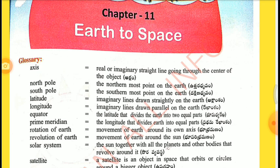Latitude: imaginary lines drawn horizontally on the earth. Longitudes: imaginary lines drawn parallel on the earth. Equator: the latitude that divides the earth into two equal parts. Prime Meridian: the longitude that divides the earth into equal parts.